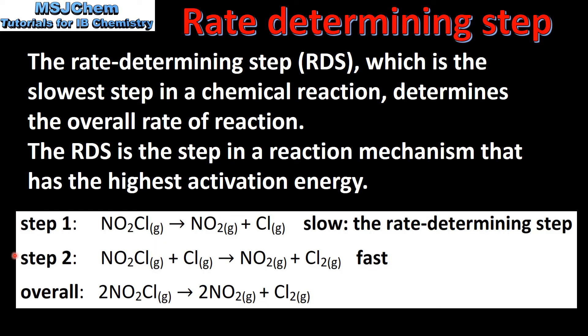Here we have a reaction mechanism for a two-step reaction. Step one is the slowest step, therefore it is the rate-determining step. Because it is the slowest step, we can deduce that step one has the highest activation energy.